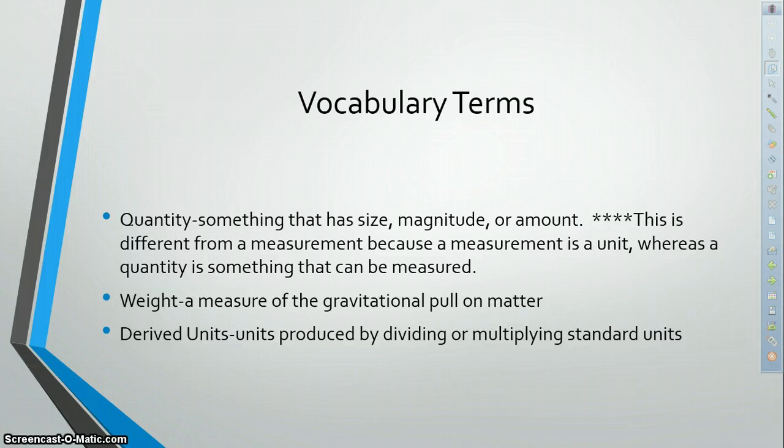Weight is a measure of the gravitational pull on matter. Weight is different from mass because mass is the same no matter where you measure it. Weight, however, depends on the amount of gravity pulling on the matter.